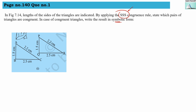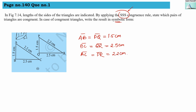Let us start with AB. AB is equal to PQ as they both have a length of 1.5 cm. Then BC equals QR as they both have a length of 2.5 cm. Then AC equals PR as they both have a length of 2.2 cm. Therefore, triangle ABC is congruent with triangle PQR as per the SSS criteria.